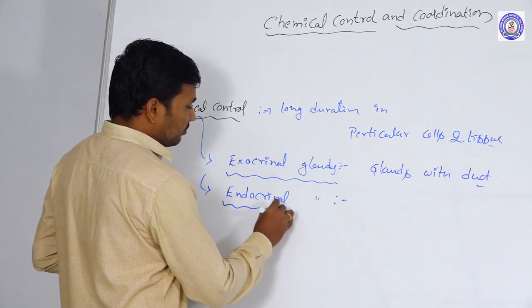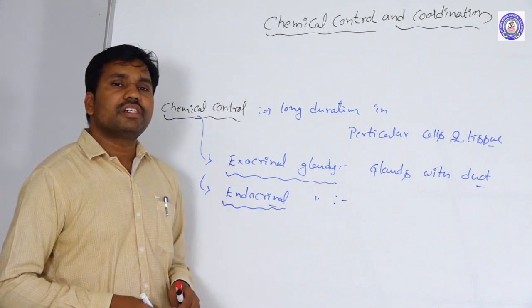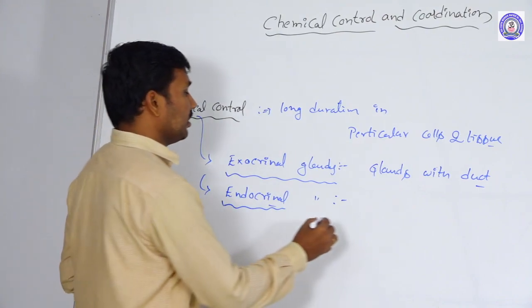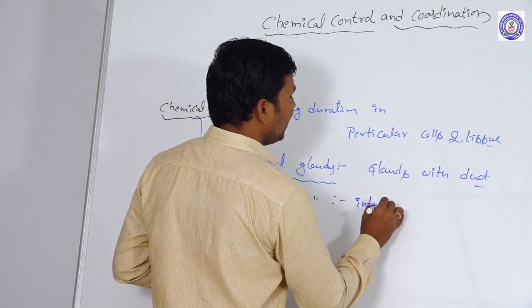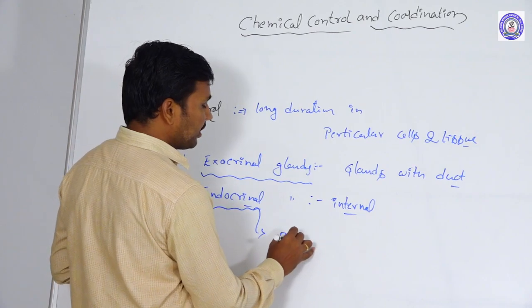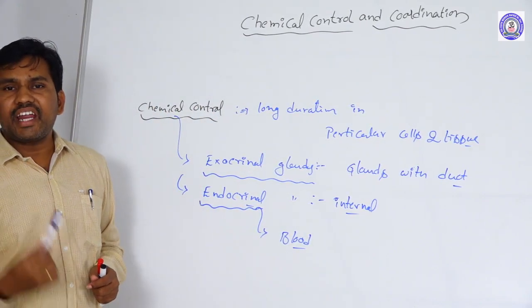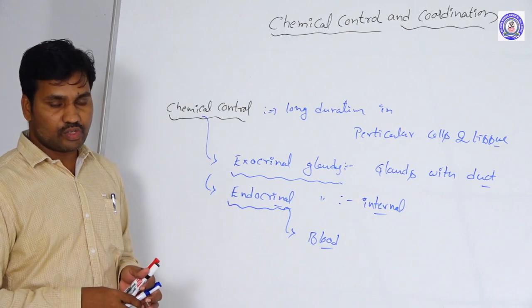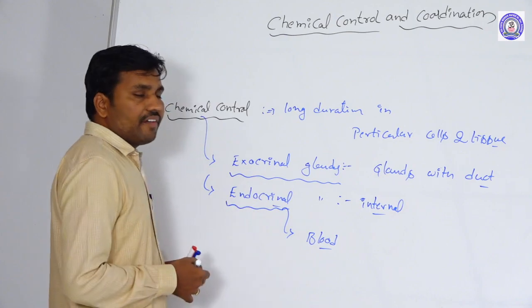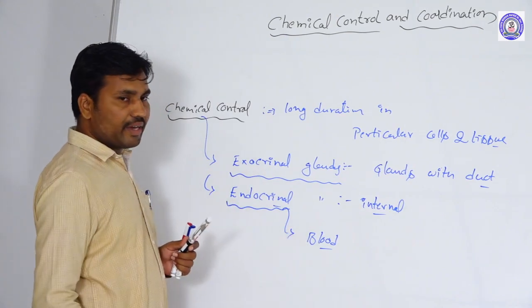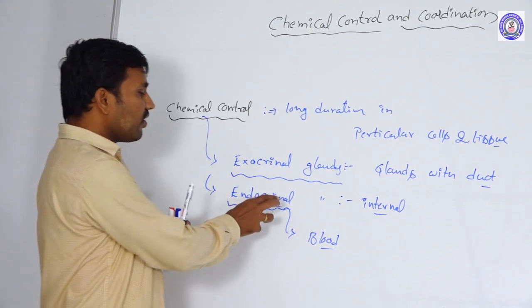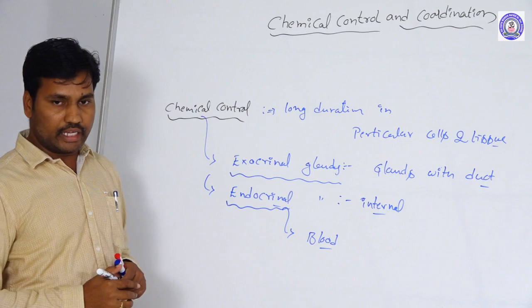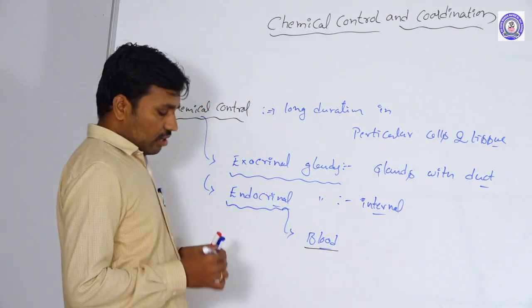The second type is the endocrine gland. 'Endo' means internal — these glands do not have any duct. Their secretion is released internally, directly into the blood. Blood is the carrier of these glandular secretions. Through blood circulation, whatever chemicals they secrete are transmitted to the target cells. This is the function of endocrine glands.